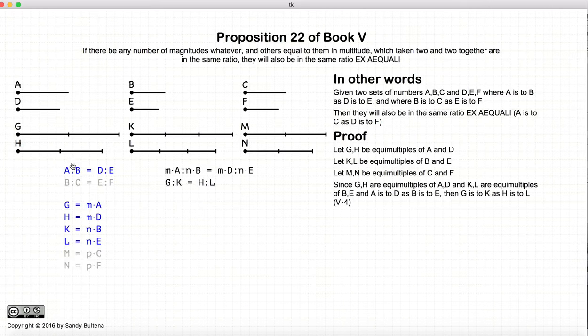Now if A to B is equal to D to E, then according to Proposition 4, if we take an equal multiple of A and D, then M times A to N times B would be equal to the ratio of M times D to N times E. Again, this comes from here, goes to here, through Proposition 4.